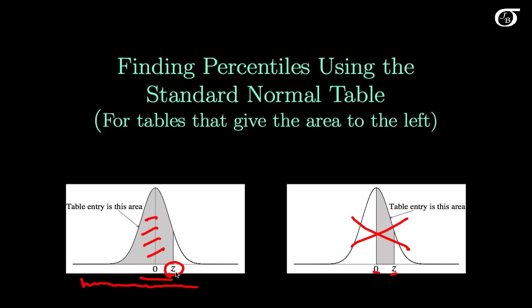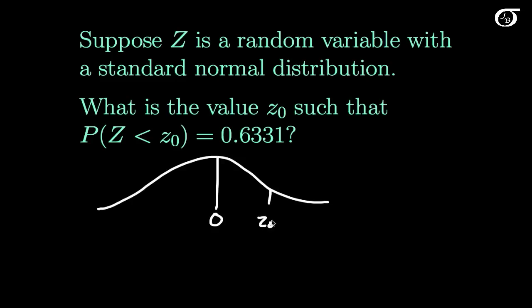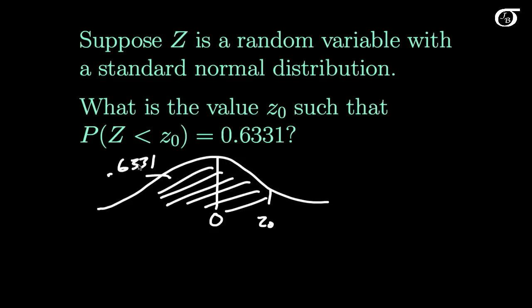When it's the other way around — given a Z value and we want to find an area — I have a separate video for that. Suppose Z is a random variable with a standard normal distribution. What is the value Z0 such that the probability Z is less than Z0 is 0.6331? First we draw our standard normal curve. The standard normal distribution is symmetric about 0 and has an area under the entire curve of 1. We need to find Z0 such that the area to the left is 0.6331.